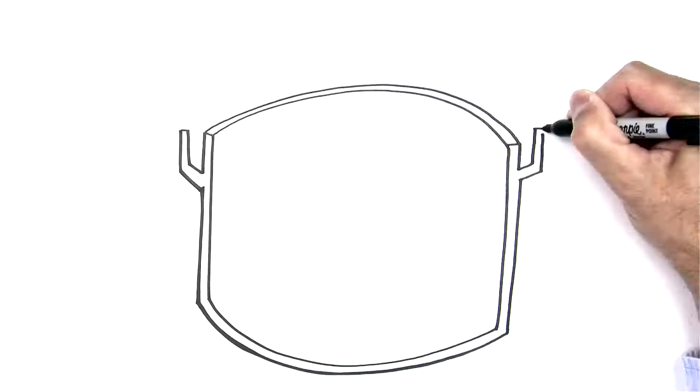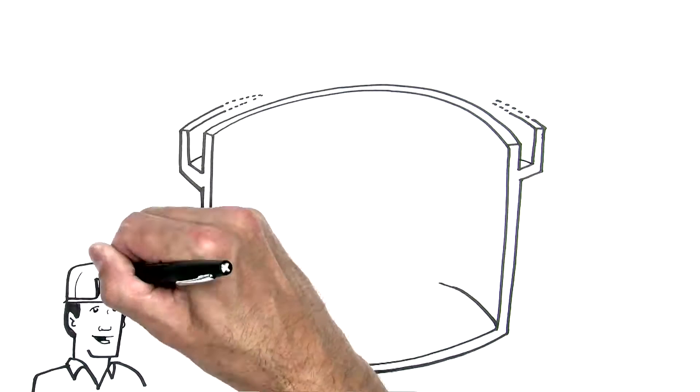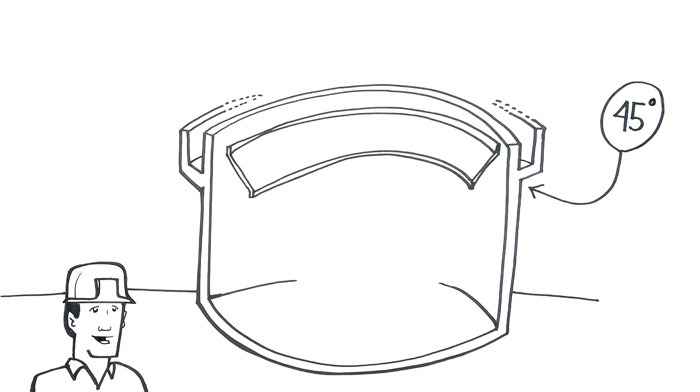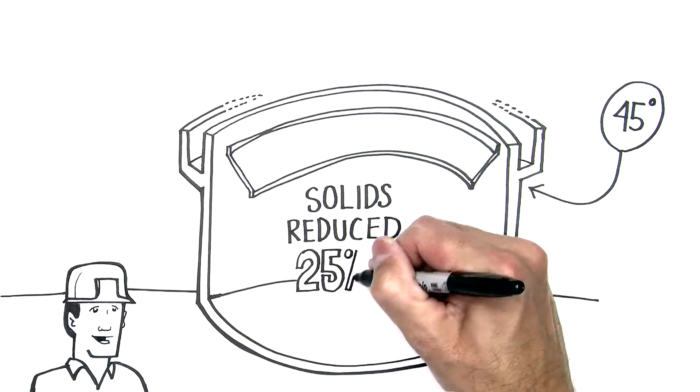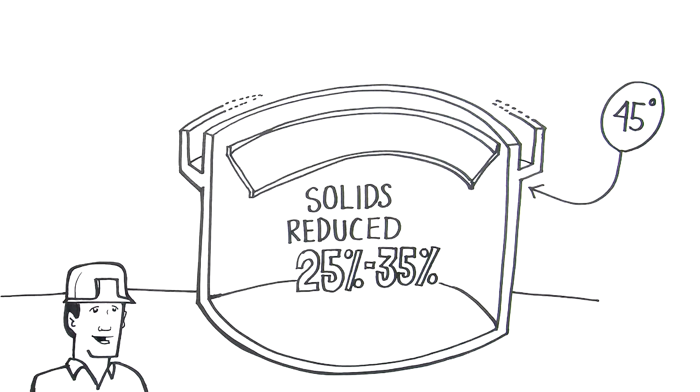NEFCO began making baffles in the 1980s. The first baffle mounted to the tank wall at a 45-degree angle and reduced effluent solids by 25-35%. That design was widely copied and is still offered today.